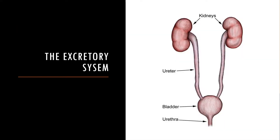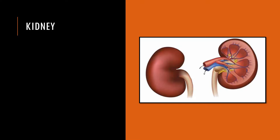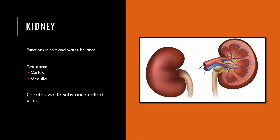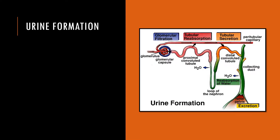We're going to begin by looking at the excretory system, which all begins at the kidney. The kidney functions in salt and water balance. It has two parts: the cortex and the medulla, and the end product of what's occurring in the kidney is urine. Inside the kidney are filtering units known as nephrons, which filter blood. The glomerulus is the filter, and there are also collecting tubules for collecting the urine — both located in the cortex.